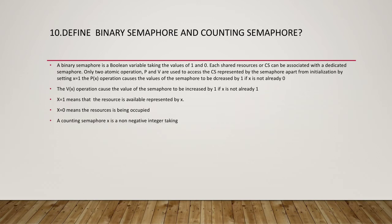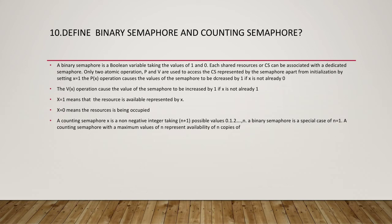A counting semaphore X is a non-negative integer taking n+1 possible values, from 0, 1, 2, up to n. A binary semaphore is a special case where n equals 1, meaning only 0 and 1 are possible values. A counting semaphore with maximum value n represents the availability of n copies of a shared resource, which can be a program segment, buffer, or I/O device.